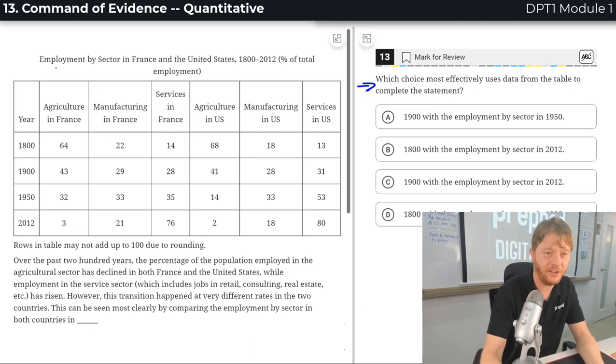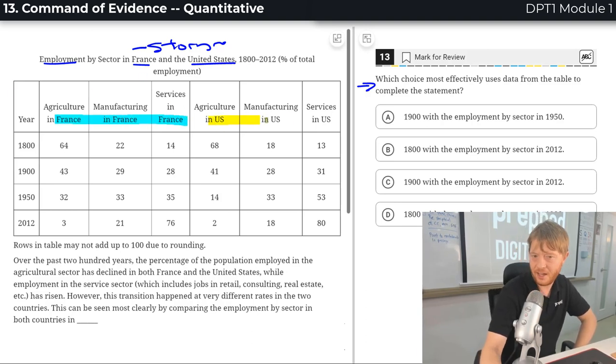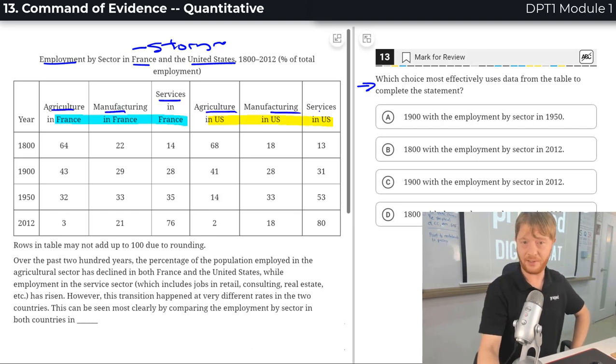So we'll start with the graph and try to get, like I said, the story, which is pretty important to do. Employment by sector in France and the United States. So let's see where is France. Here's France and the United States is the other side. And I can see they're comparing agriculture and manufacturing and services on both sides. The past to the present.